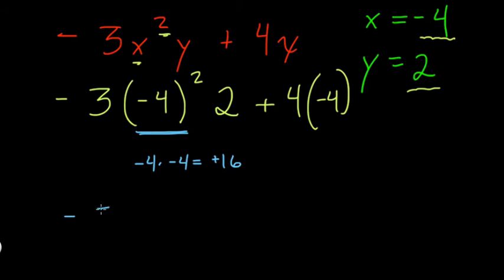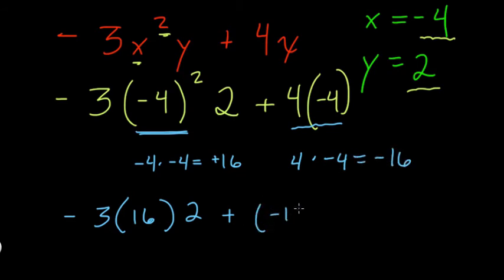So we have negative 3 times positive 16 times 2 plus 4 times negative 4. What's that? Well, that's just a positive times a negative, which is negative 16, right? So plus negative 16.